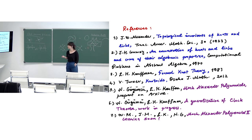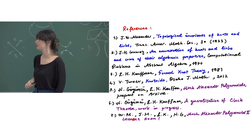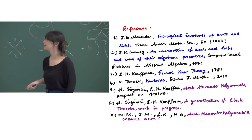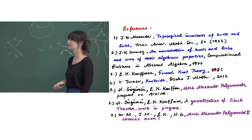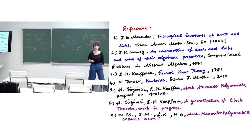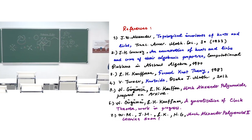This is the end of my talk — thank you very much for participating and for your questions. Here are some references: I started with the paper of Alexander, then there are references to the knotoids paper, to Mock-Alexander polynomials, and we are working on a generalization of the clock theorem, which is still a work in progress. Joe, Lou, and I are writing a paper together as a continuation of the first Mock-Alexander polynomial paper. I can suggest more references if you contact me, and I will try to send you these lecture notes.